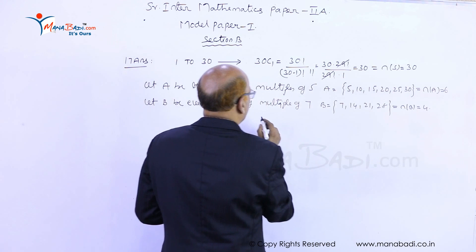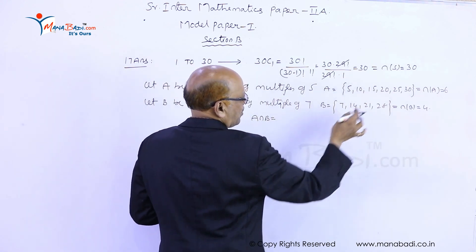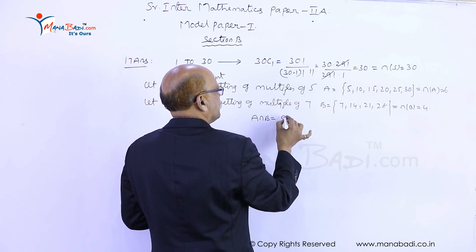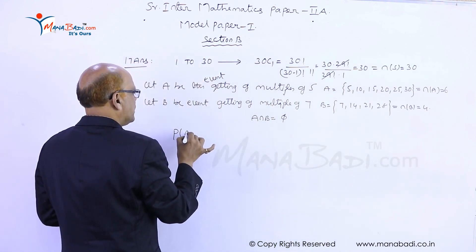Now is there any common element from A and B? A intersection B - there are no common elements in A and B, so we will write simply null set.